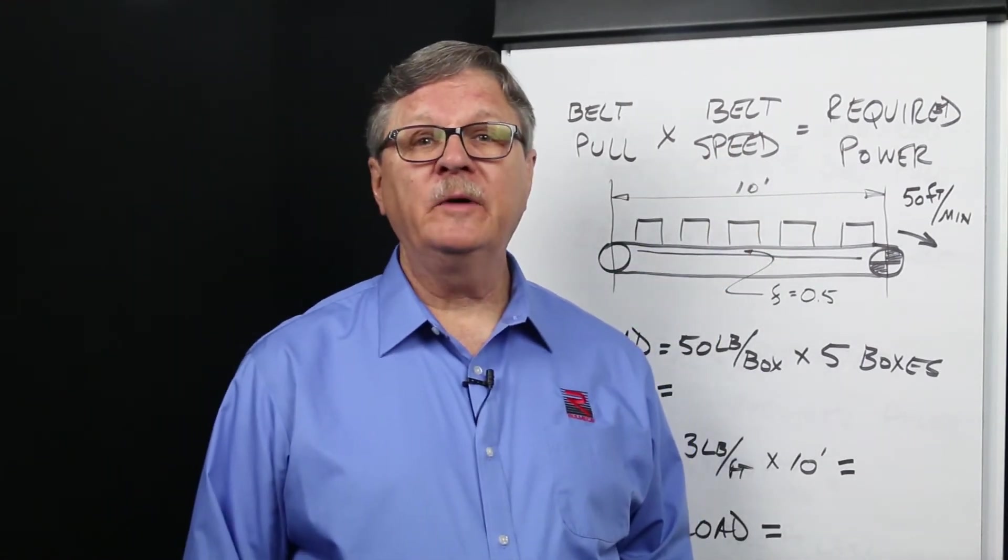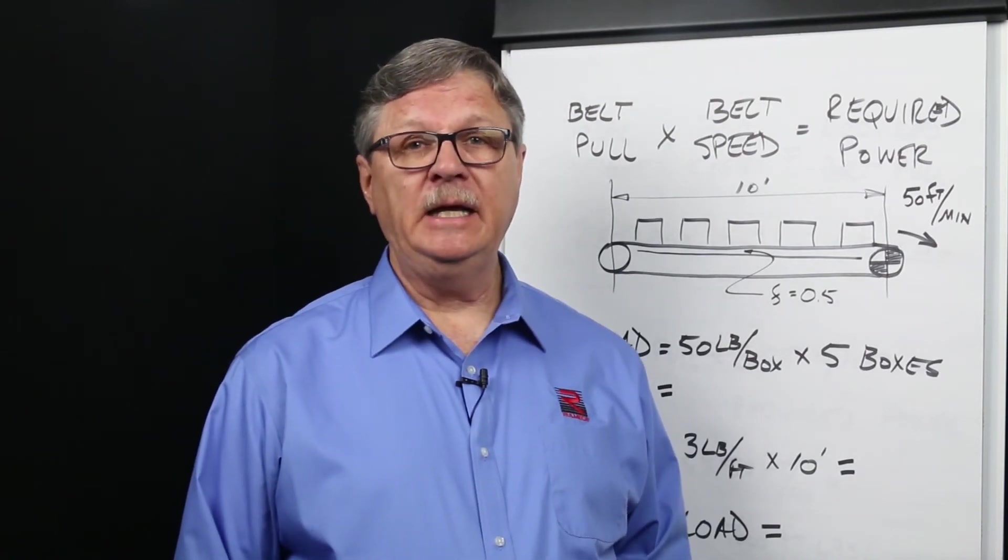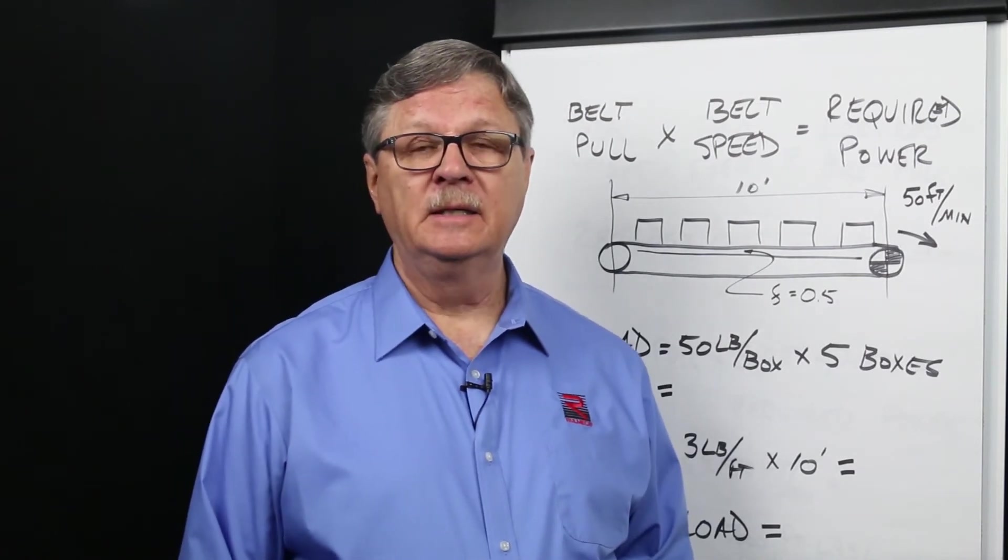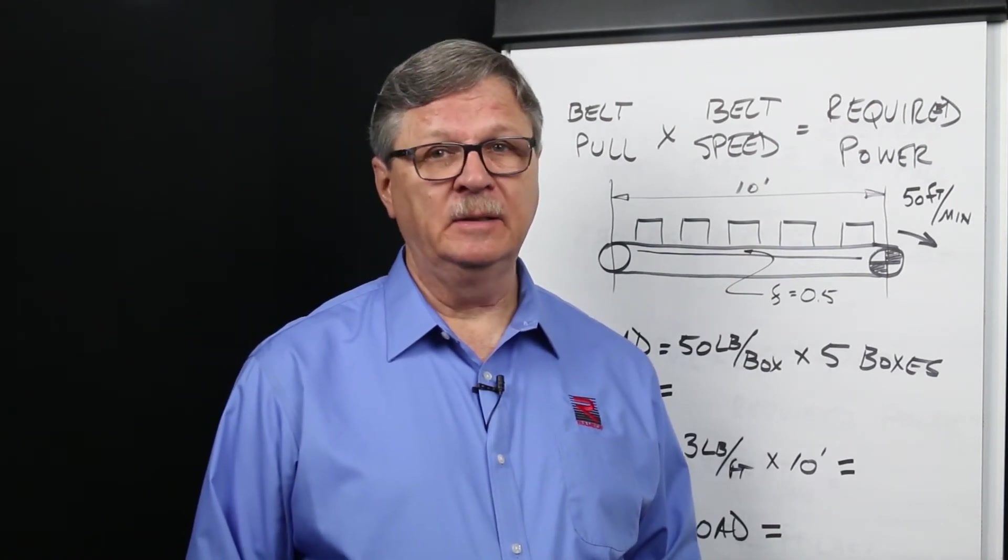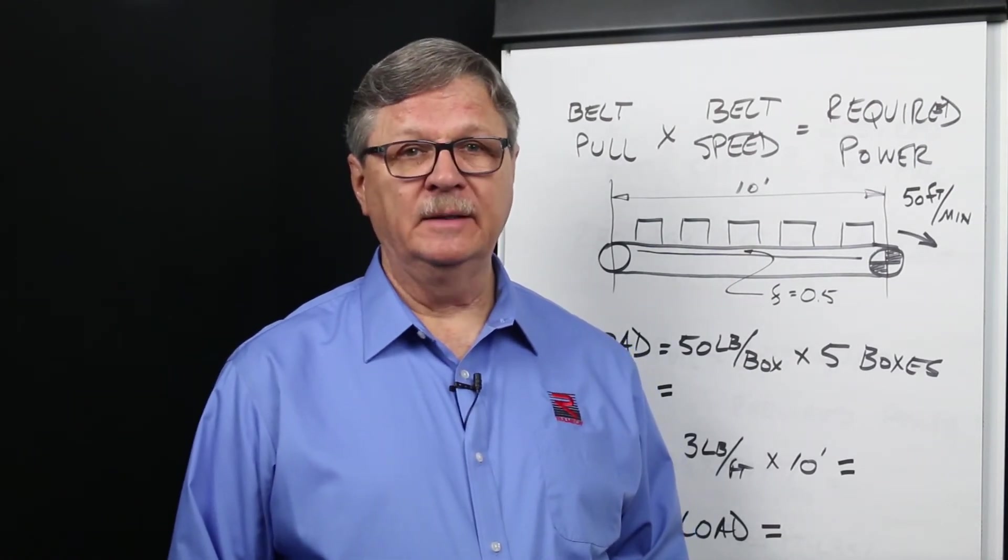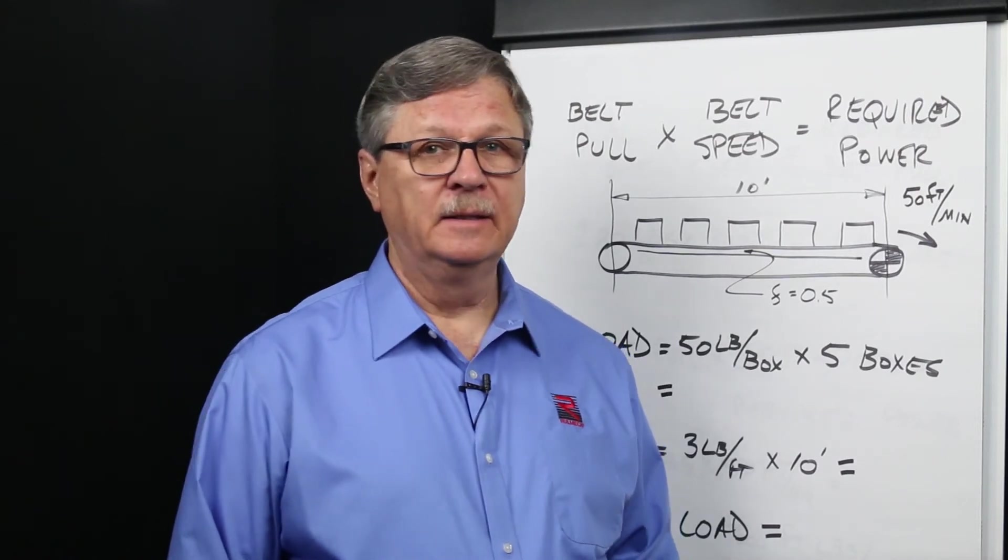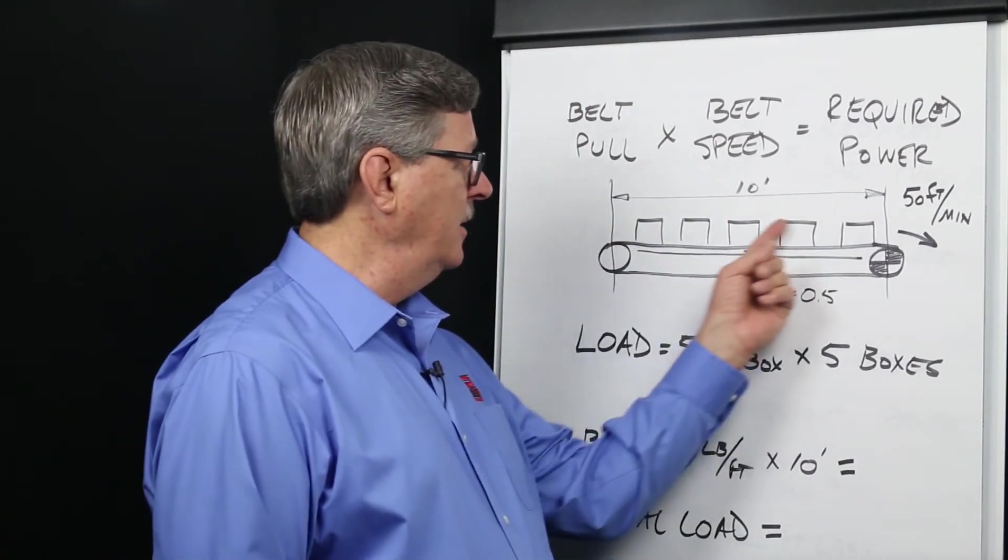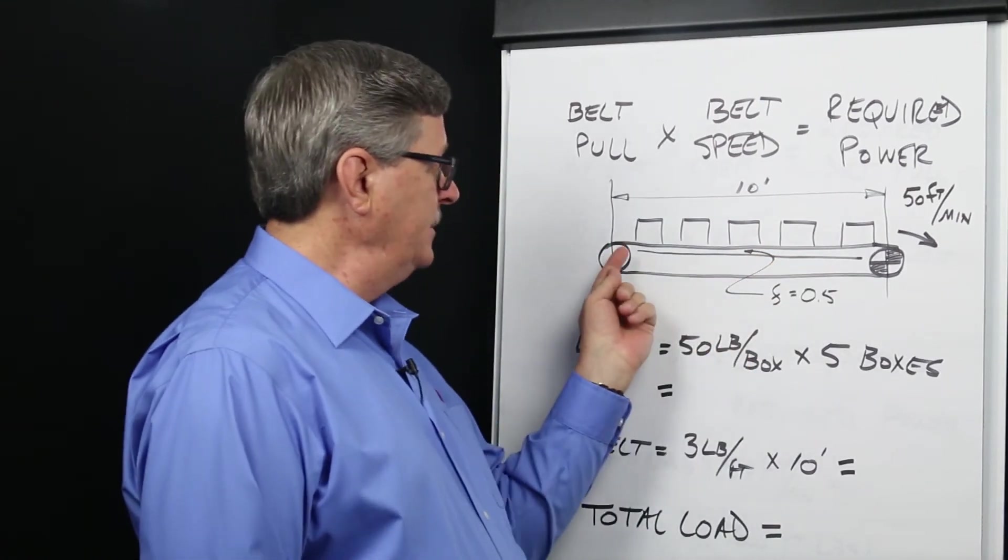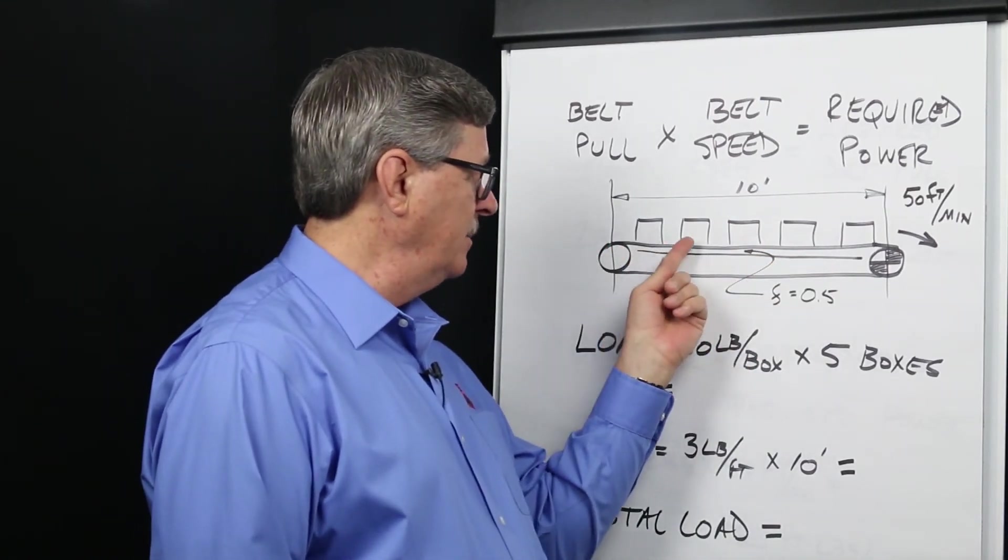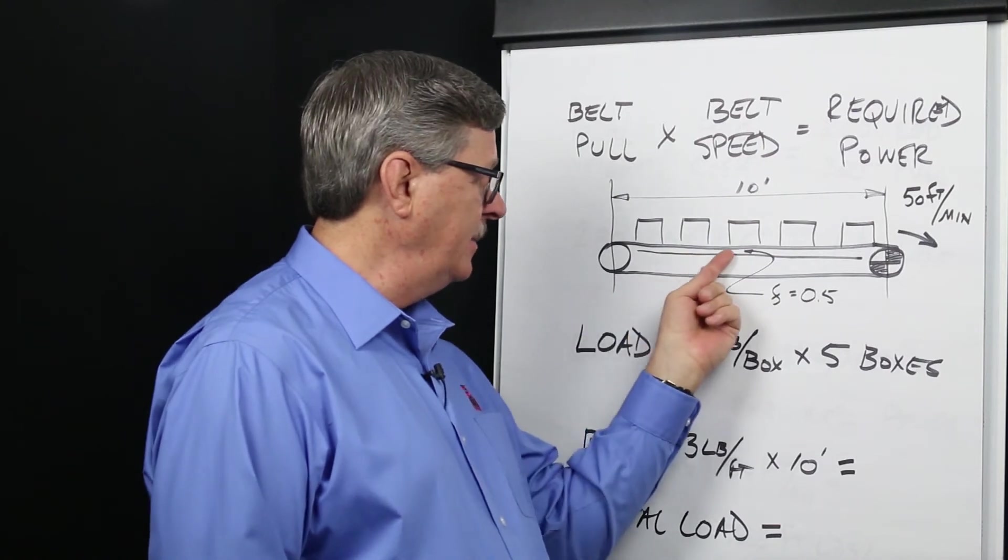The belt pull required to move packages on a slider bed conveyor equals the total weight of all packages plus the weight of the belt times the coefficient of friction between the bottom of the conveyor belt and the top of the slider bed.